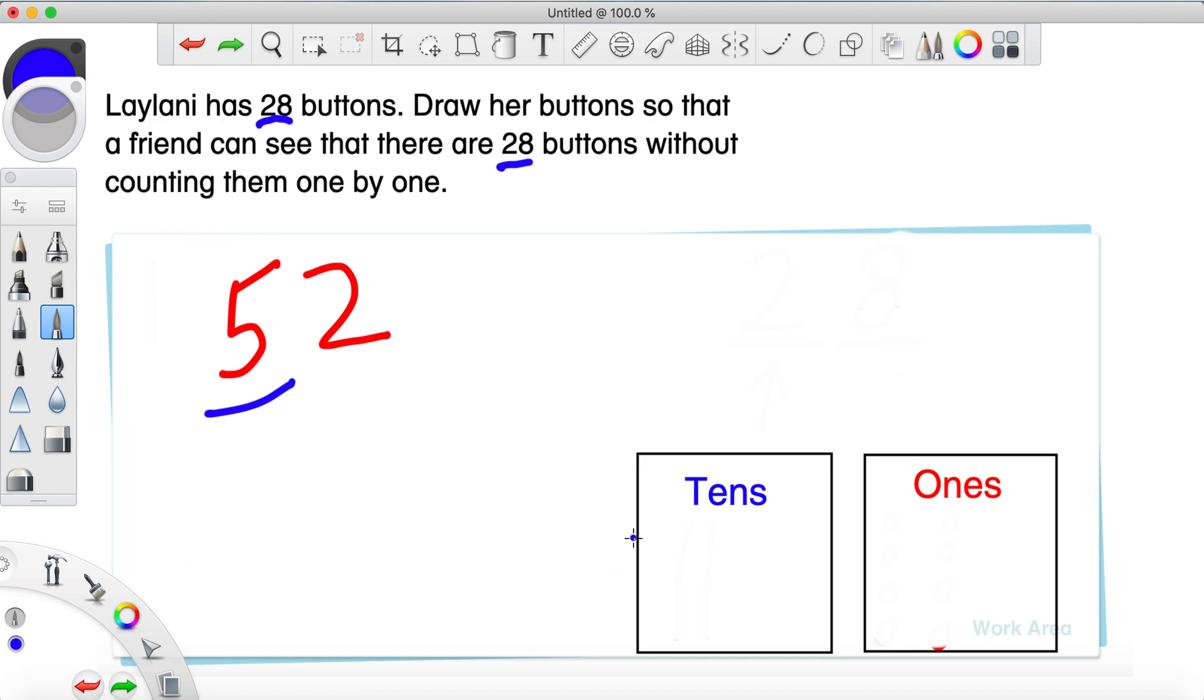So, how many tens sticks do we have to draw to show 50? Because, remember if we have 5 in the tens that means 50, right? Well, we would have to draw 5 because we have a 5 in the tens place. 1, 2, 3, 4, 5.